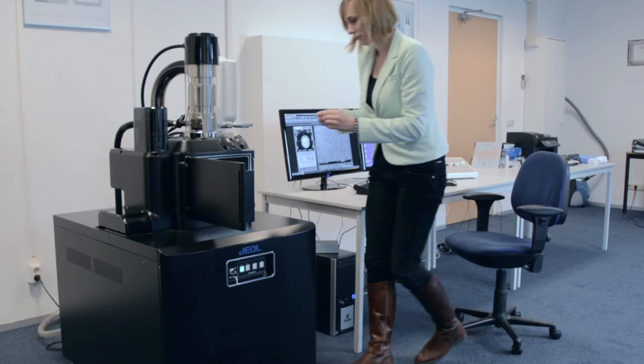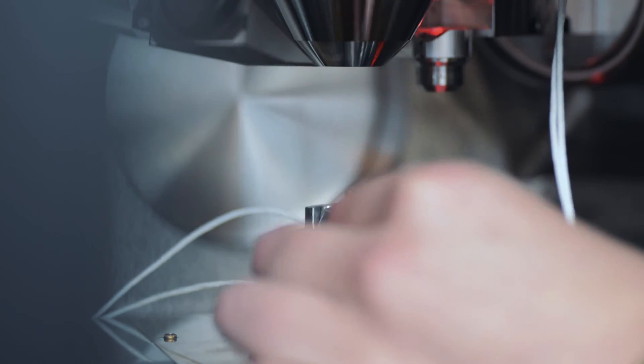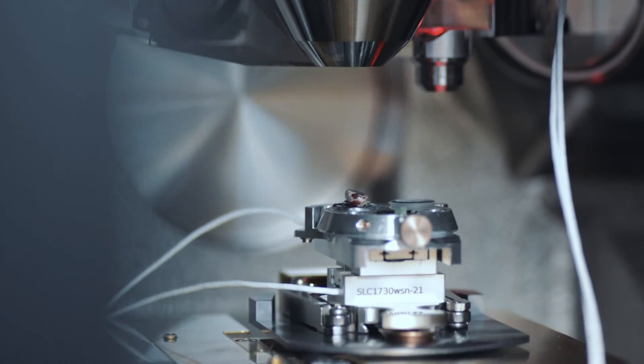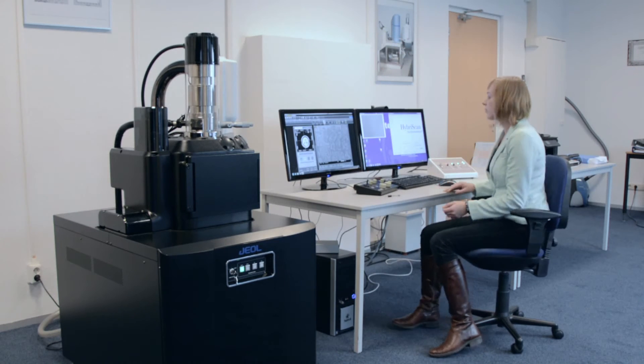The sample holder with a sample is inserted on the substage in the vacuum chamber. A SEM image of the sample can be made at any desired magnification and areas of interest are selected.